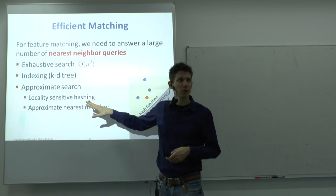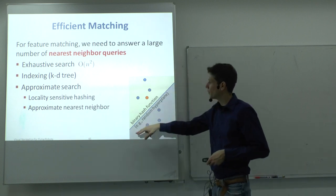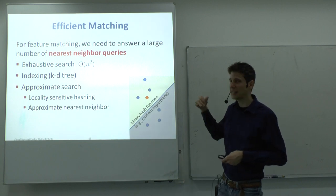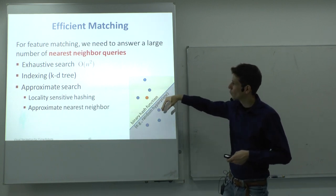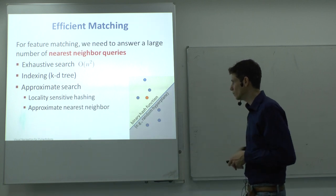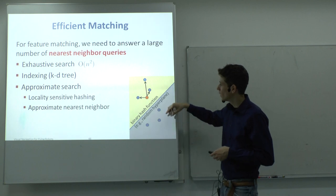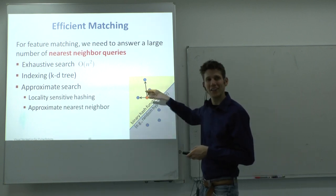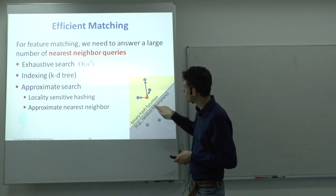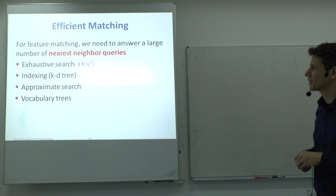Because of the high dimensionality, even KD tree search can be expensive. This is why approximate nearest neighbor searches were developed. One idea is to use a hashing function — a hyperplane sampled arbitrarily in feature space — to split your feature set into two halves. This removes half the data points to search. Approximate methods don't give you the exactly nearest neighbor, but are good enough in many cases.